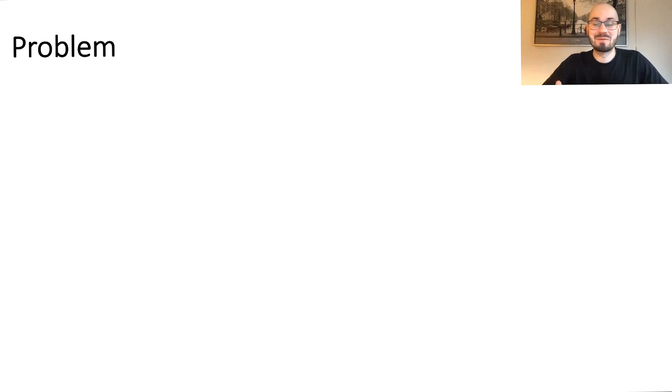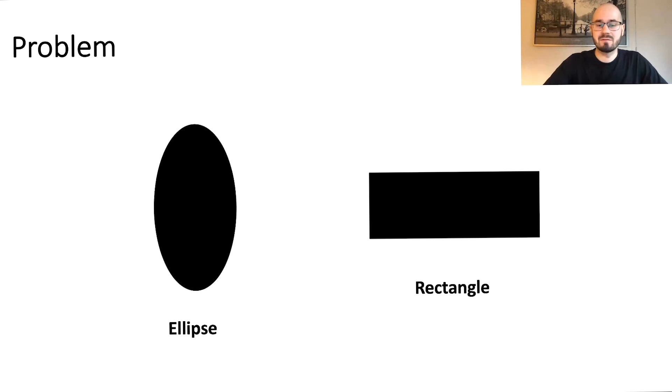Let us start with an example problem I have designed to teach you how genetic algorithms work. In this problem we have two shapes, an ellipse and a rectangle, and each of these two shapes has a width and a height.